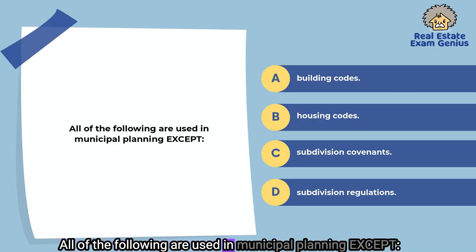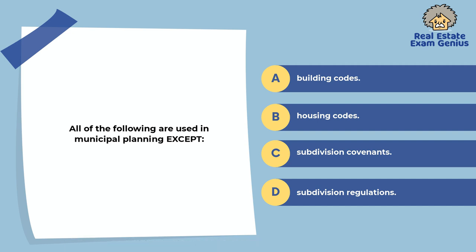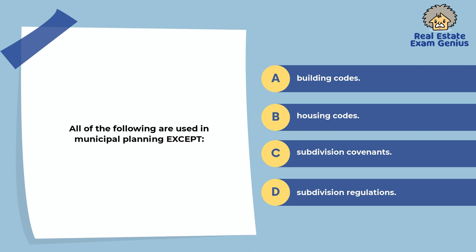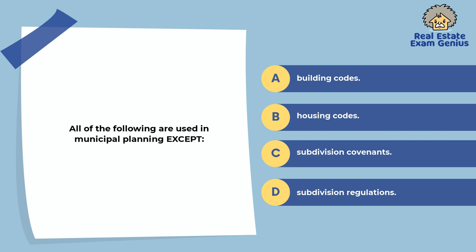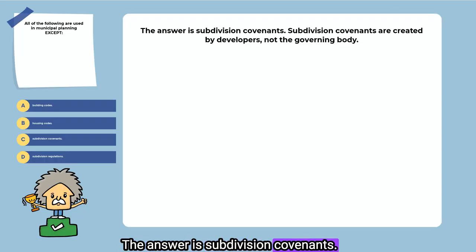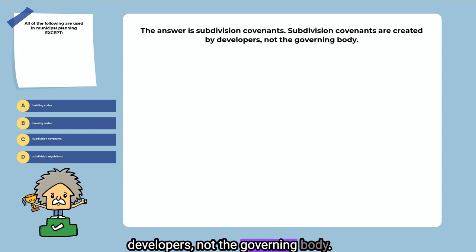All of the following are used in municipal planning except: building codes, housing codes, subdivision covenants, or subdivision regulations. The answer is subdivision covenants. Subdivision covenants are created by developers, not the governing body.